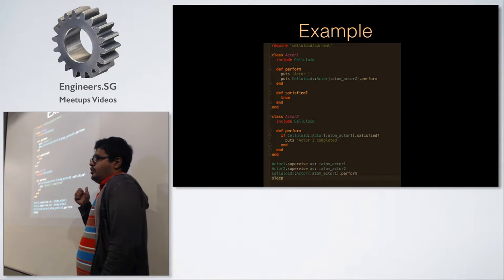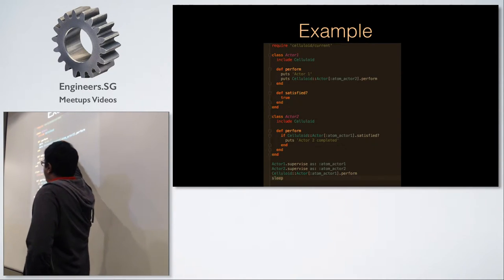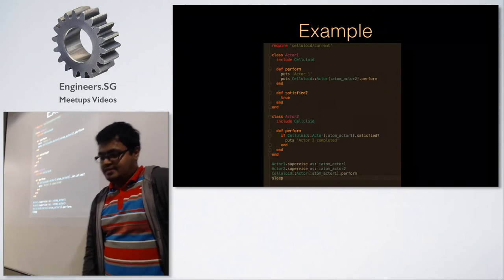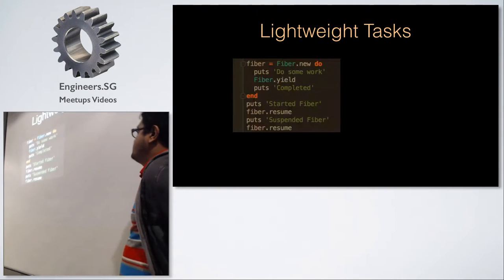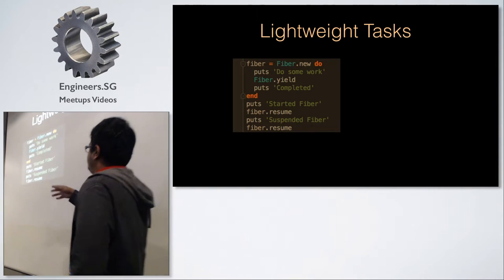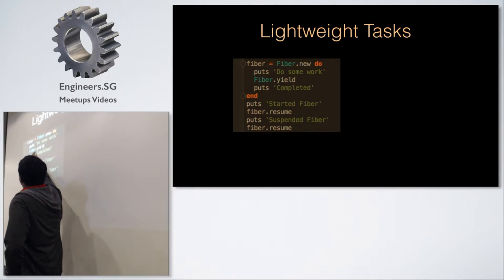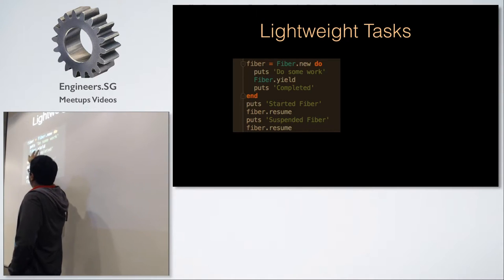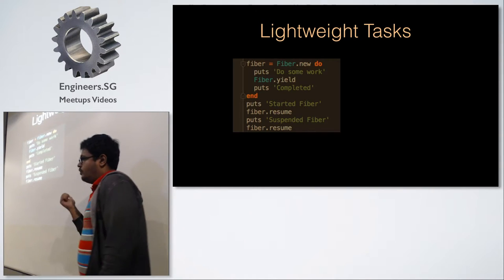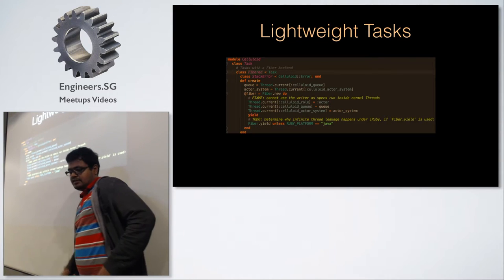How does Celluloid achieve this suspension in Ruby? It uses fibers. A fiber does nothing when created — you resume it, it runs, then you can yield on it, which suspends execution and saves context. You can then resume it later. Celluloid uses fiber tasks for all actor operations. You can see fiber tasks being created inside Celluloid for all its tasks.